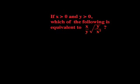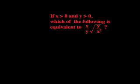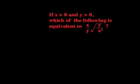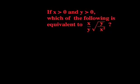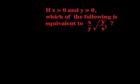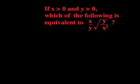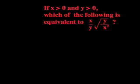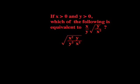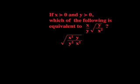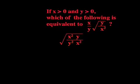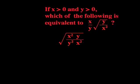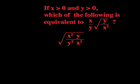Now we can check our answer by comparing it to the problem. If X is greater than zero and Y is greater than zero, which of the following is equivalent to X over Y times the square root of Y over X squared? We can begin by putting everything under a square root sign, so we have X squared times Y over Y squared times X squared, all under our square root sign.